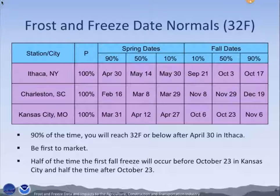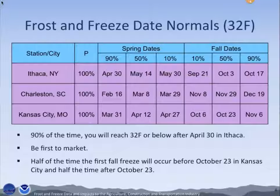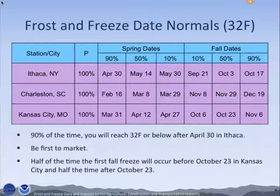Let's say you want to get your crop to market early and you're willing to take a 10% chance — a 90th percentile risk — that you'll get freezing conditions after that. You can start something on April 30th, maybe just one or two crops or fields out of your entire farm. And if it doesn't happen, then you're first to market. So this is really a risk perspective. We provide these at the 10th, 50th, and 90th percentile. On the flip side, we have fall — when is the first fall freeze occurring?